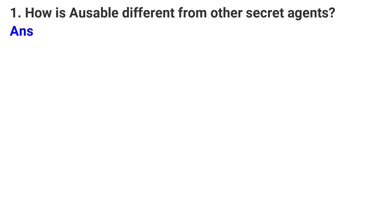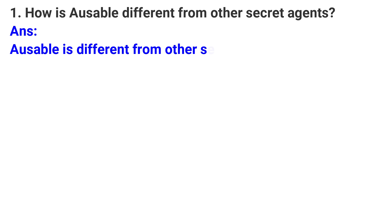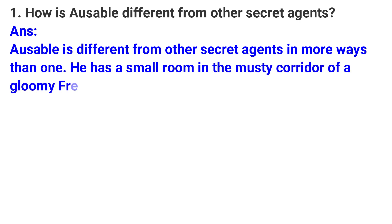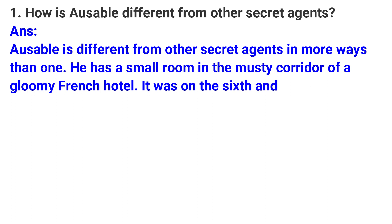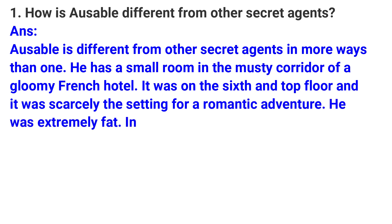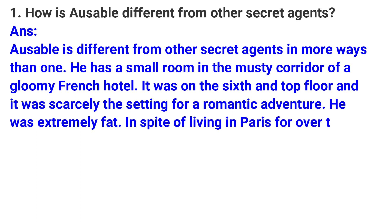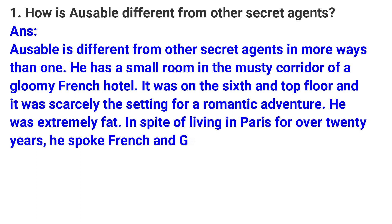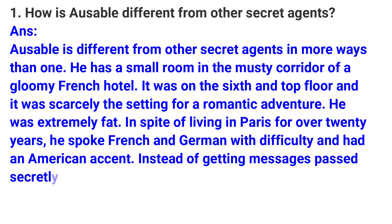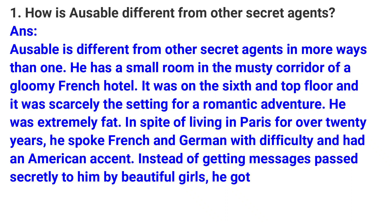Answer: Ausable is different from other secret agents in more ways than one. He has a small room in the musty corridor of a gloomy French hotel. It was on the sixth and top floor, and it was scarcely the setting for a romantic adventure. He was extremely fat.